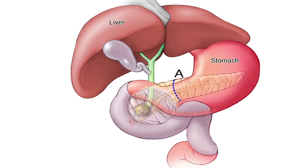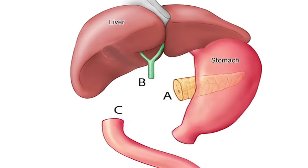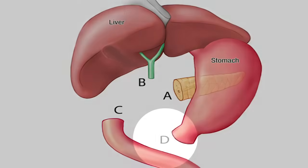The reconstruction is done by putting all of this back together. If we divided the pancreas here — we call this A — and we divided the bile duct — we call this B — and we divided the intestine — we call this C — taking all of this out leaves us with the pancreas at A, the bile duct at B, and the intestine at C. We also divided the stomach just past the pyloric valve at the first portion of the duodenum, and we call this D.